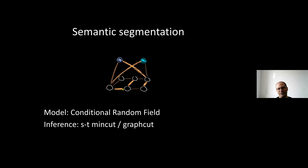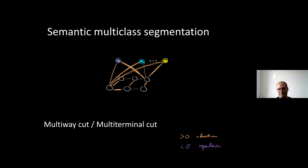Sometimes there's evidence that two pixels probably belong to the same class, so some edges are made stronger - that would be a conditional random field, and it's no harder to solve. As soon as you have more than two classes, the problem becomes a multiway cut or multi-terminal cut problem. Even with only attractive interactions, this becomes NP-hard. There are good approximate algorithms to solve it, but you cannot do this exactly except under very special circumstances.